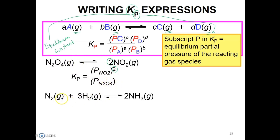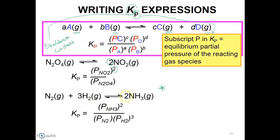Here we have N2 gas plus 3H2 gas producing 2 ammonia gas. As a reminder, before writing the Kp expression, check that the reaction is already balanced. The Kp expression for this reaction is: partial pressure of ammonia gas raised to the power of 2, over the partial pressure of nitrogen gas times the partial pressure of hydrogen gas raised to the power of 3.